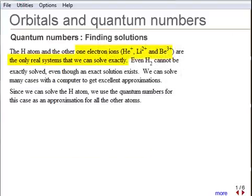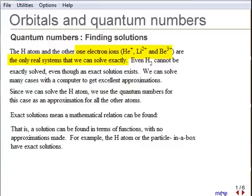Although the one-electron atoms are the only ones with exact solutions, we use the quantum numbers of hydrogen as a basis for approximations for all the other atoms.